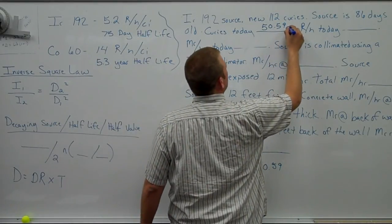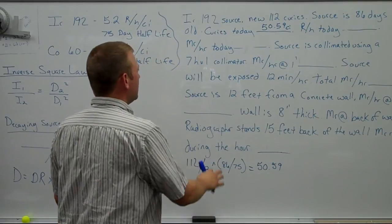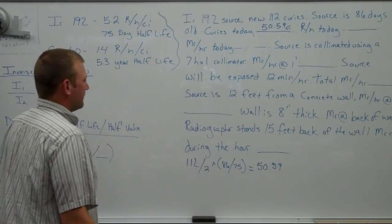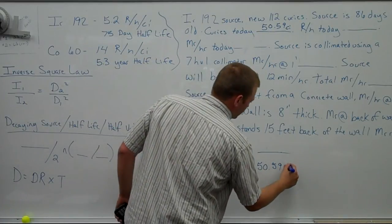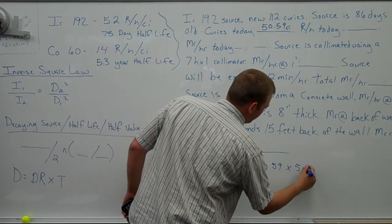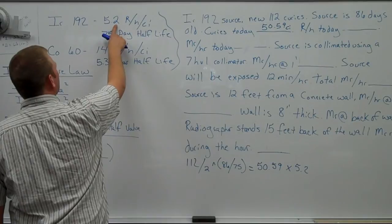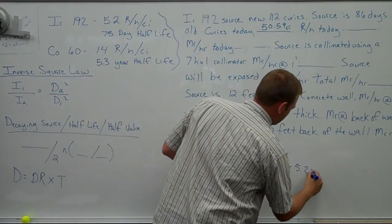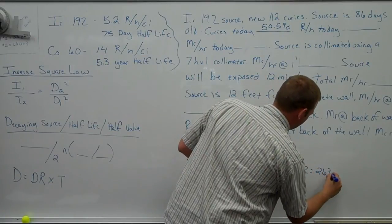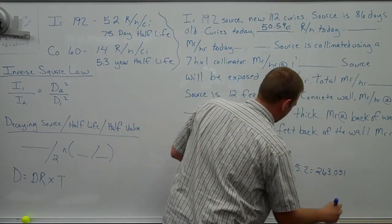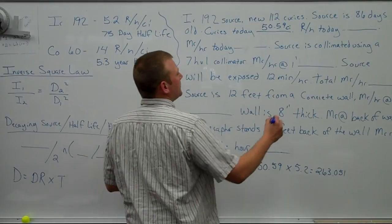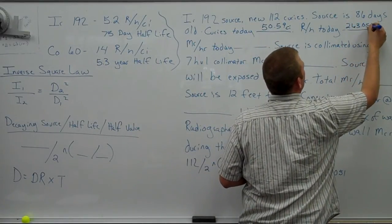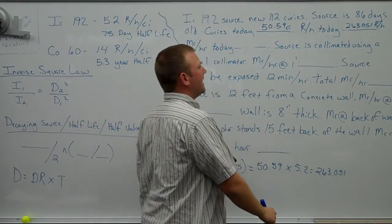We can go ahead and label that curies. Now we want to go from curies to Rankin. Multiply by 5.2. That comes from right there, 5.2 Rankins per hour per curie. That puts us at 263.051 in my calculator. 263.051 Rankins per hour.